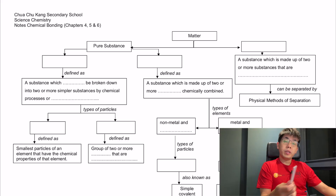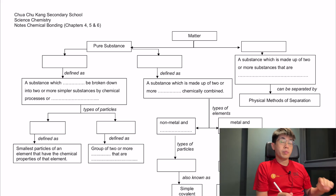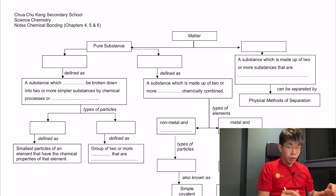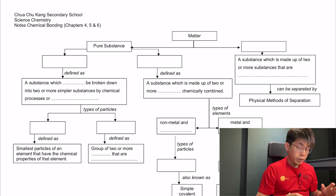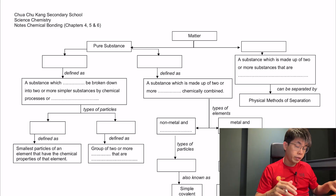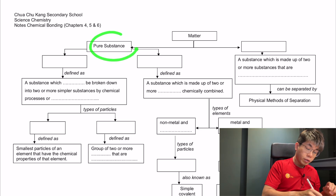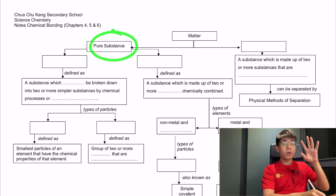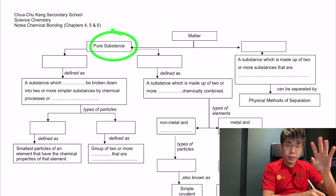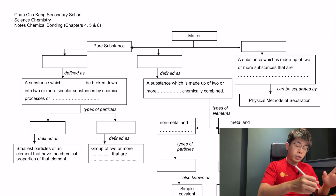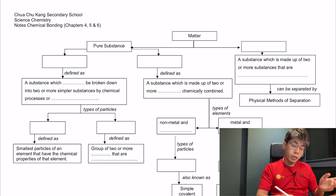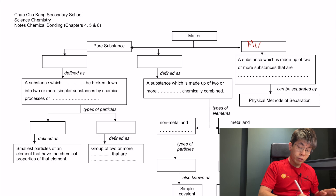Hi everyone, Mr. Benjamin here, and today we'll be talking about elements, compounds, and mixtures. This can be found in your notes, so let's go through it. All matter can be divided into two different categories: one would be pure substances, things that are only consisting of one particular substance, and the opposite is mixtures.